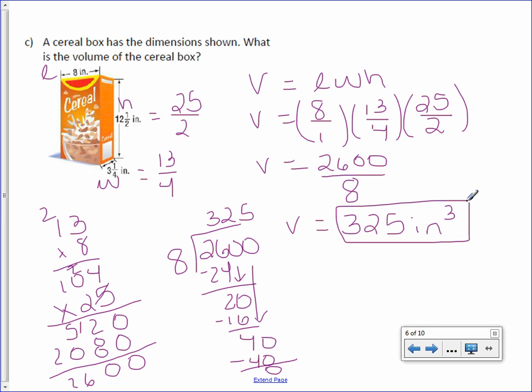If you change those to decimals, 12 and a half would have been 12.5, and 3 and 1/4 would have been 3.25, but you still would have gotten the same answer of 325.